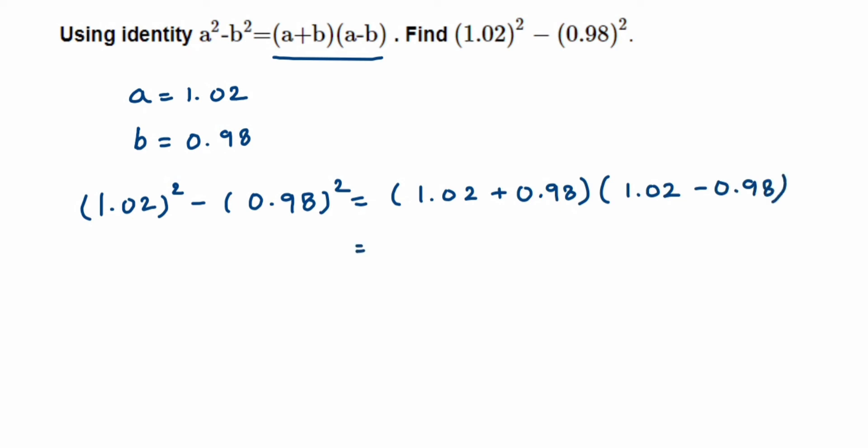When you add, 1.02 and 0.98 will get 2, and when we subtract 1.02 and 0.98 will get 0.04. Now just multiply, when you multiply you will get 0.08. Just multiply 2 and 4, 2 fours are 8, and then we will get the remaining zeros.